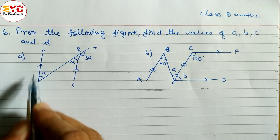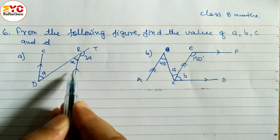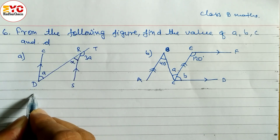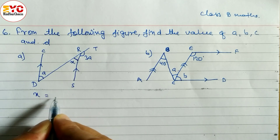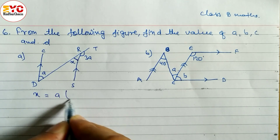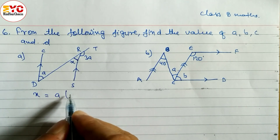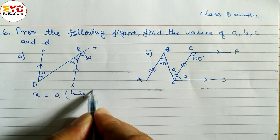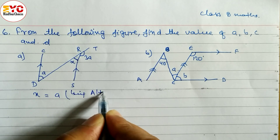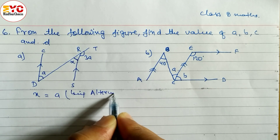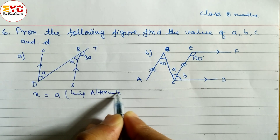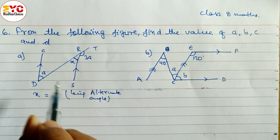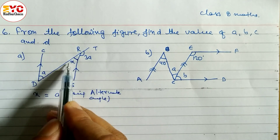x is equal to a. This is in the form of Z and these two are parallel lines. So we can write x is equal to a. Reason: being alternate angle.